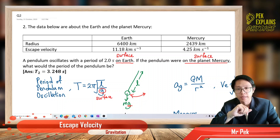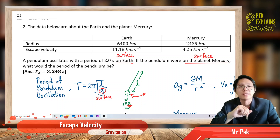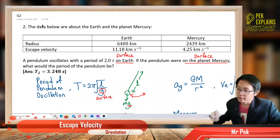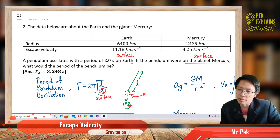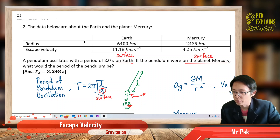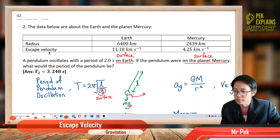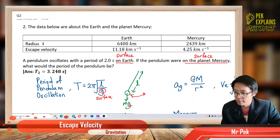This is the second question in escape velocity. My name is Mr. Peck. Welcome to my channel. The data below are about the Earth and the planet Mercury. Here we have the radius and escape velocity for both planet Earth and Mercury.